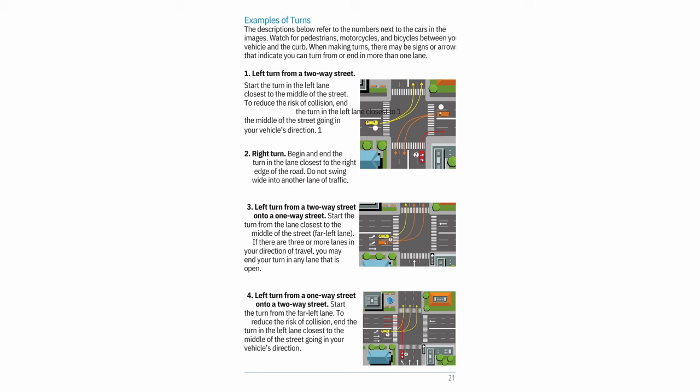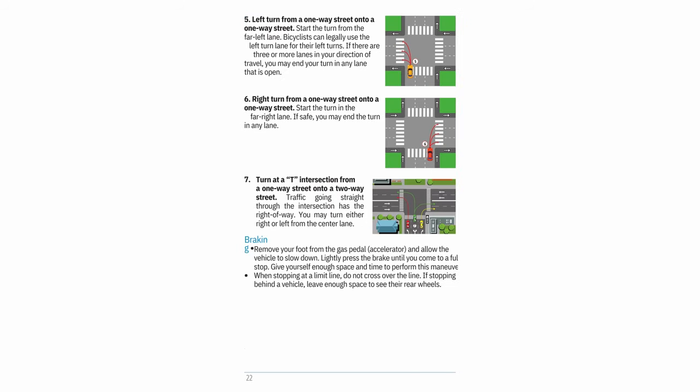4. Left turn from a one-way street onto a two-way street — start from the far left lane, end in the left lane closest to the middle of the street going in your direction. 5. Left turn from a one-way street onto a one-way street — start from the far left lane. Bicyclists can legally use the left turn lane. If three or more lanes go in your direction, you may end in any open lane. 6. Right turn from a one-way street onto a one-way street — start in the far right lane; if safe, you may end in any lane.